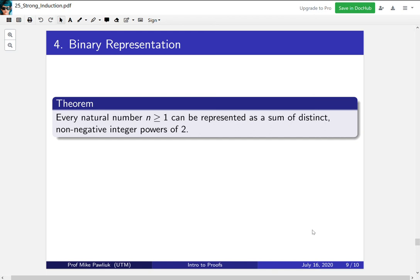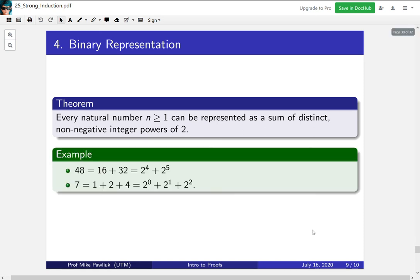One last theorem we'll look at is that every natural number can be represented as a sum of distinct non-negative integer powers of 2. Now that's quite a bit of a mouthful, hilariously, so let's actually look at some examples. 48 can be written as 2 to the 4 plus 2 to the 5. So each power is different and the exponents are non-negative and they're integers. So this would be a binary representation of 48.